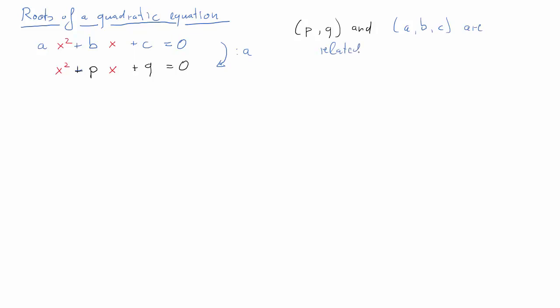The way they are related is pretty straightforward. Imagine dividing the first equation by a, and then we find that p is b over a and q is c over a.